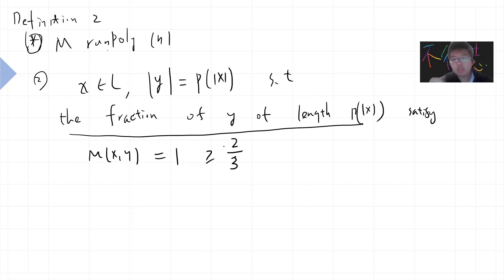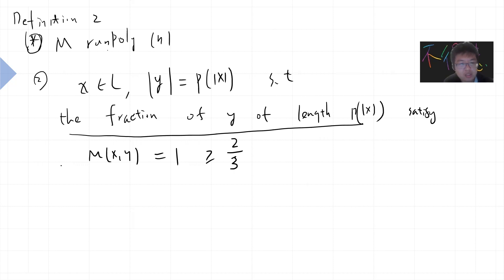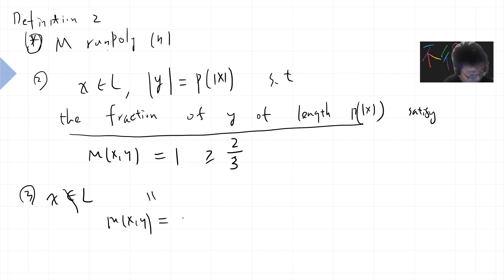This means you take all the input randomness, and the fraction of randomness that gives you the correct result is at least two-thirds. This is essentially the same as the previous definition but makes the randomness explicit as an input y of length p(|x|). And if x does not belong to L, the fraction of y of length p(|x|) such that M of (x, y) equals one is less or equal to one-third.